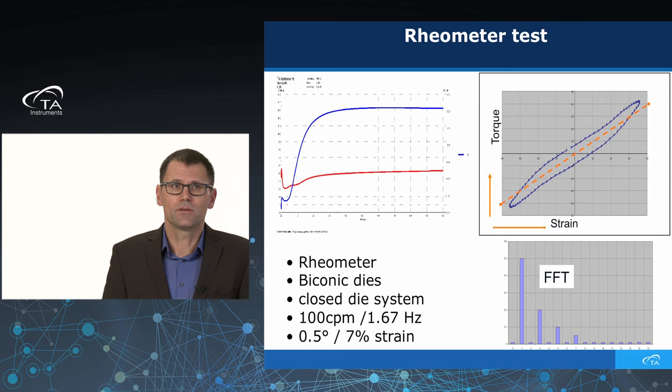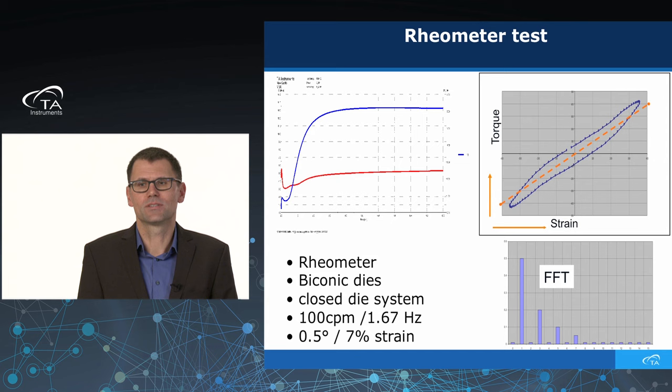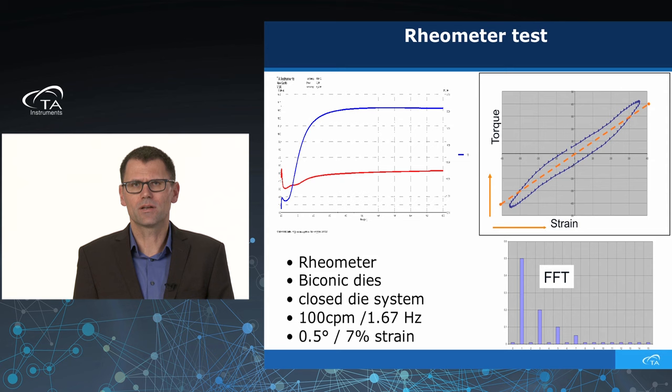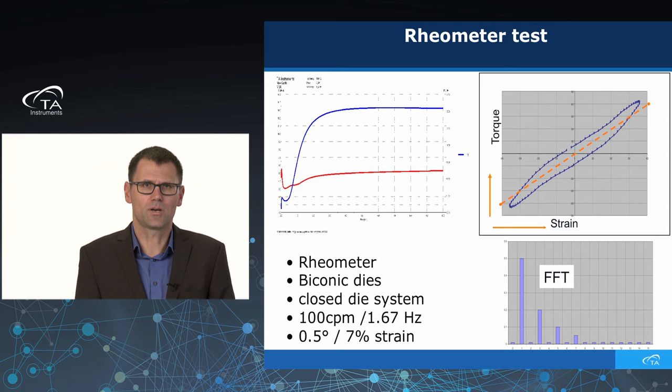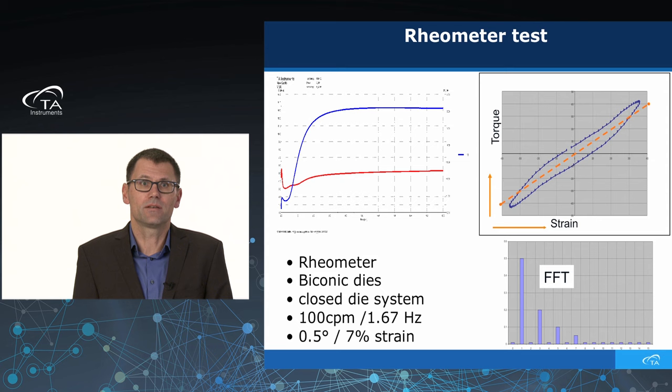In the rubber industry, we often do not have linear behavior because we have polymers with high structure and high branching. We put many ingredients into our compounds like carbon black and others. So the answer is very often not a linear, nice ellipse — it is a distorted ellipse. In the Fourier analysis, we get not only a signal at the first harmonic but also at higher harmonics. Currently, everyone can calculate these higher harmonics, but they are typically discarded. However, this is very important information, which I will explain later.